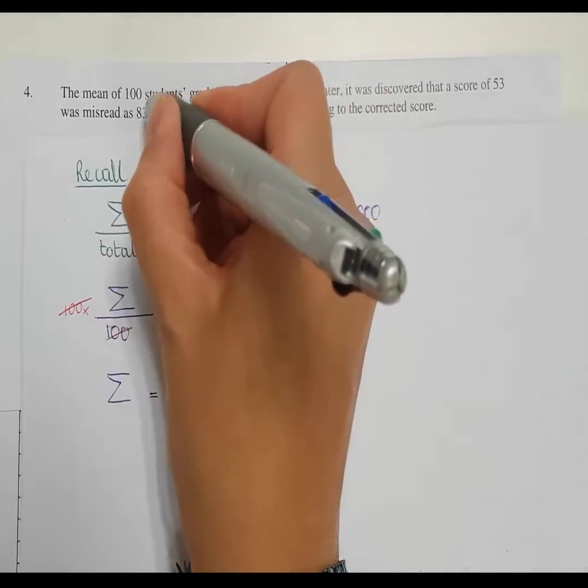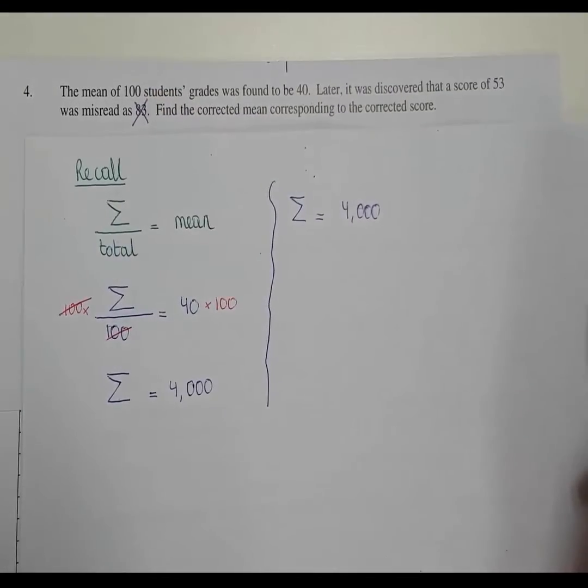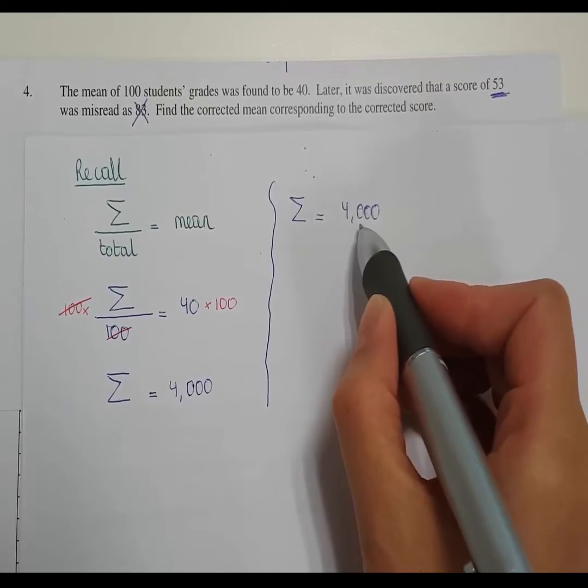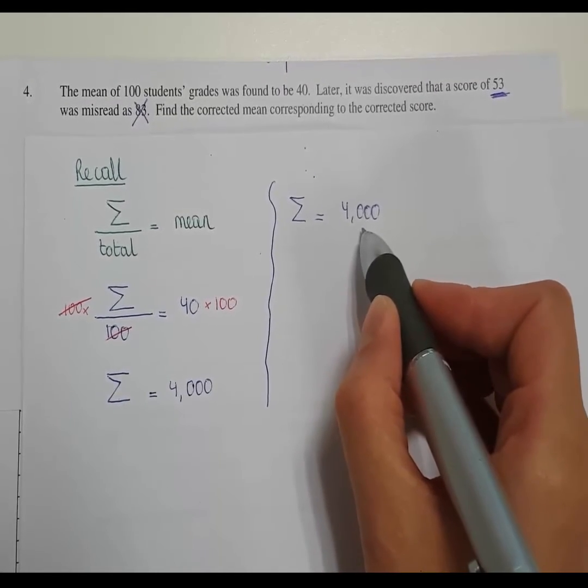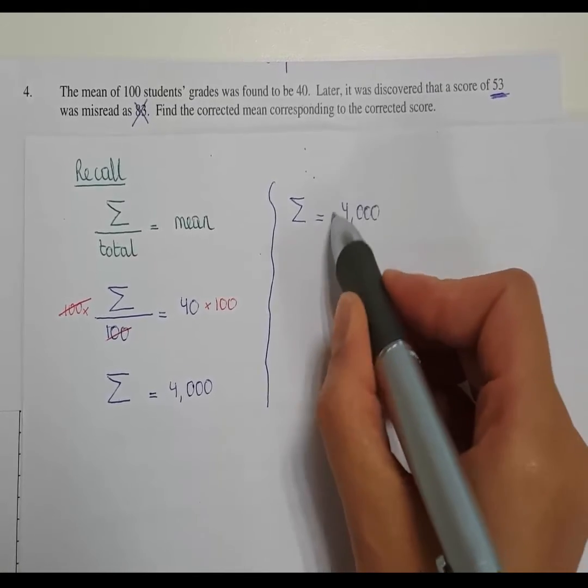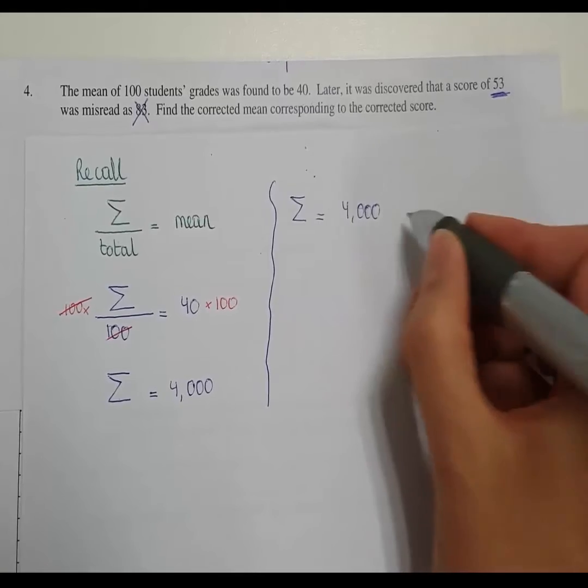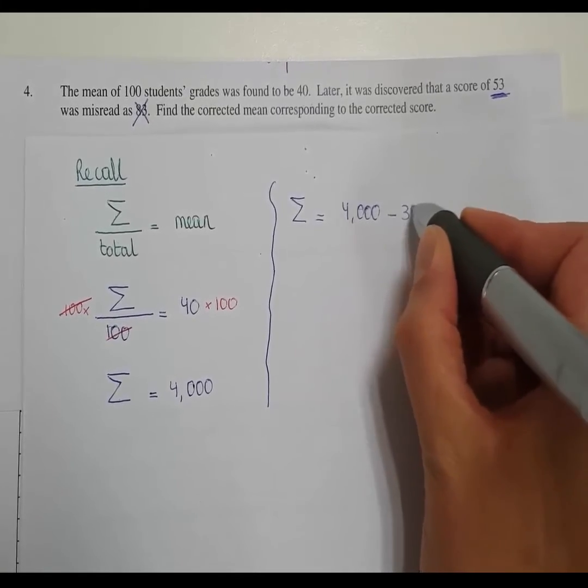So that means it was not supposed to be 83. It was supposed to be 53. So that means that we've got 30 too much in this score. So the sum of all the grades is too much.